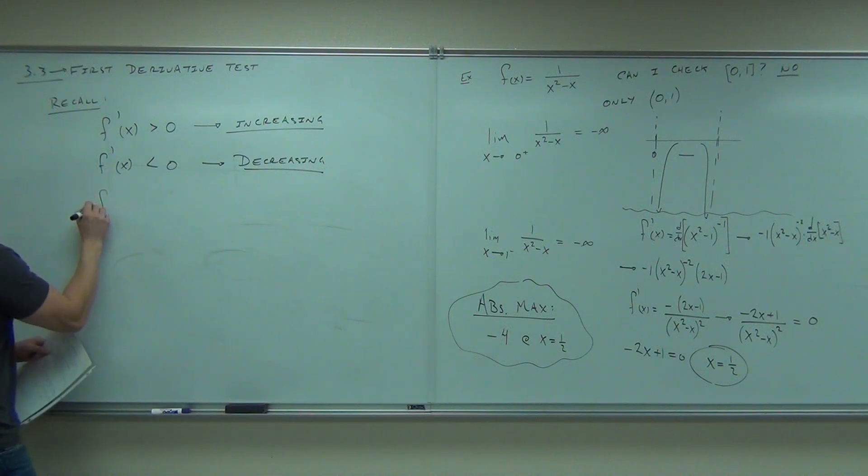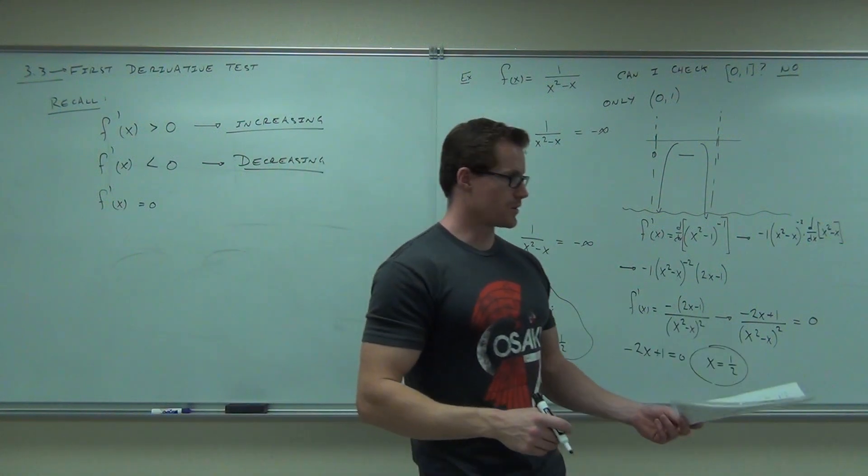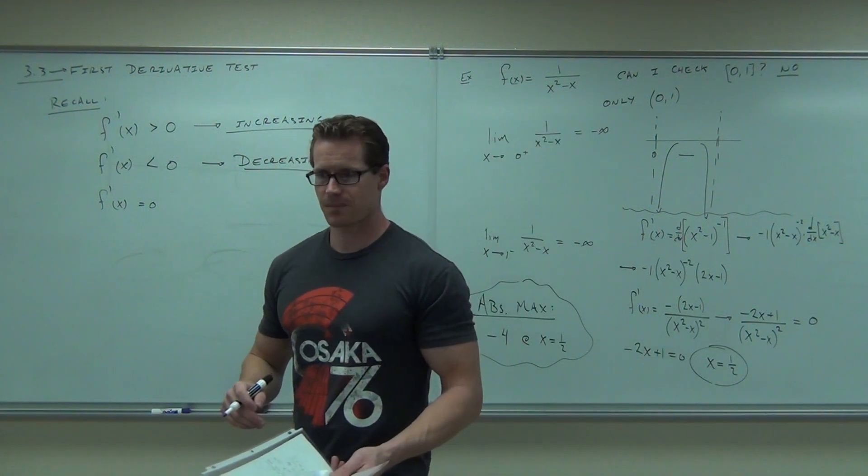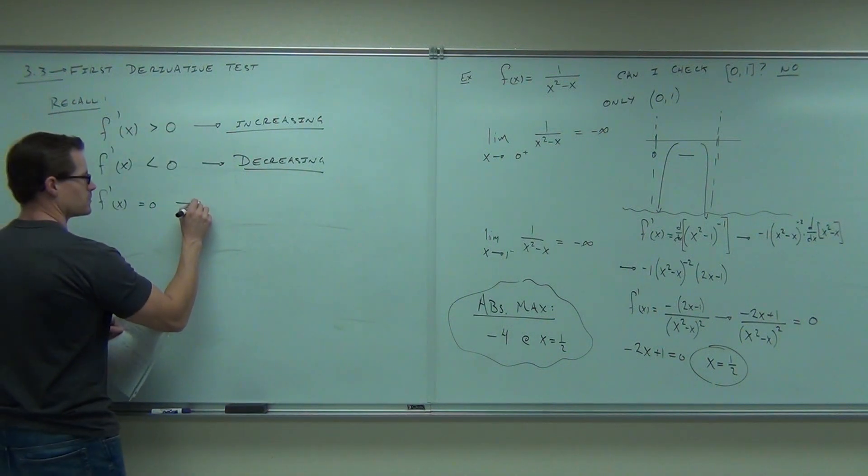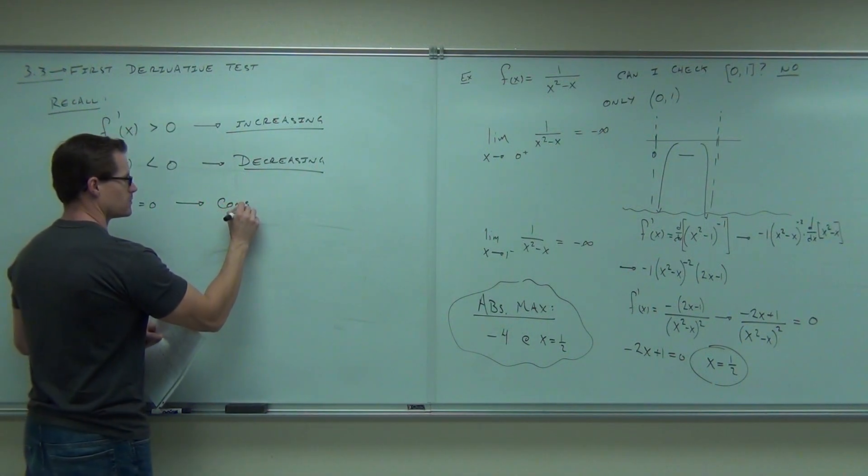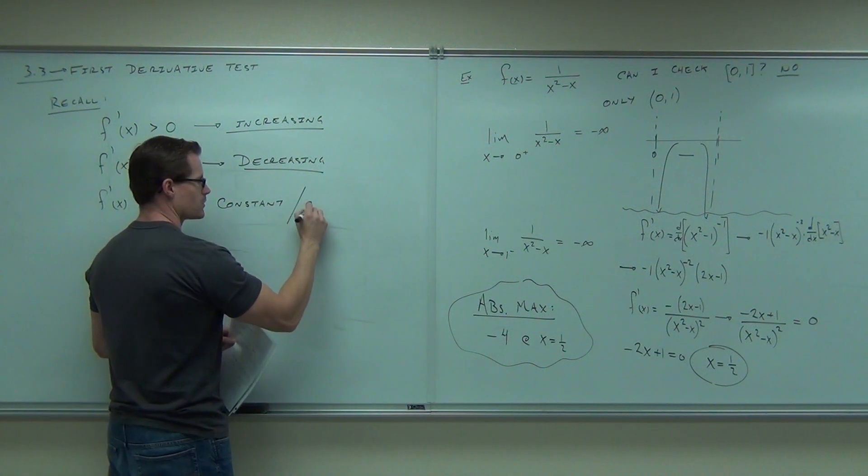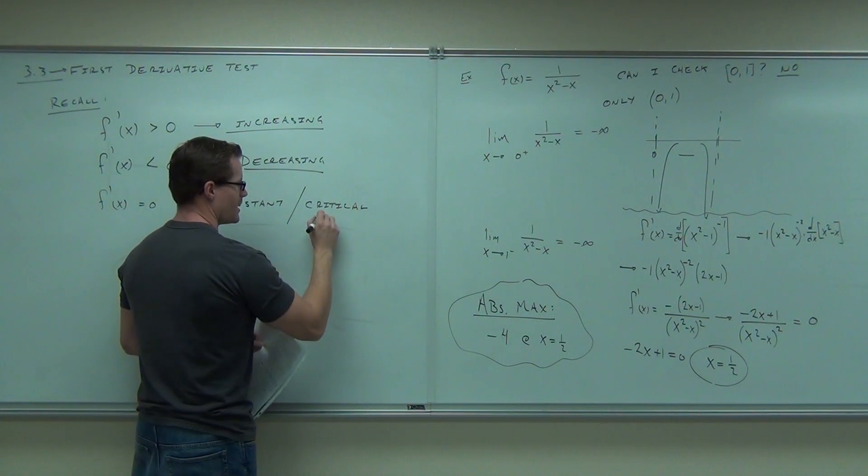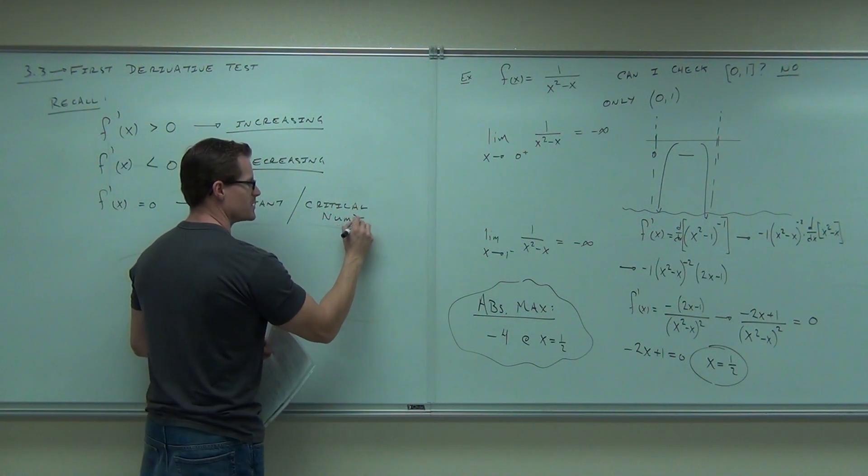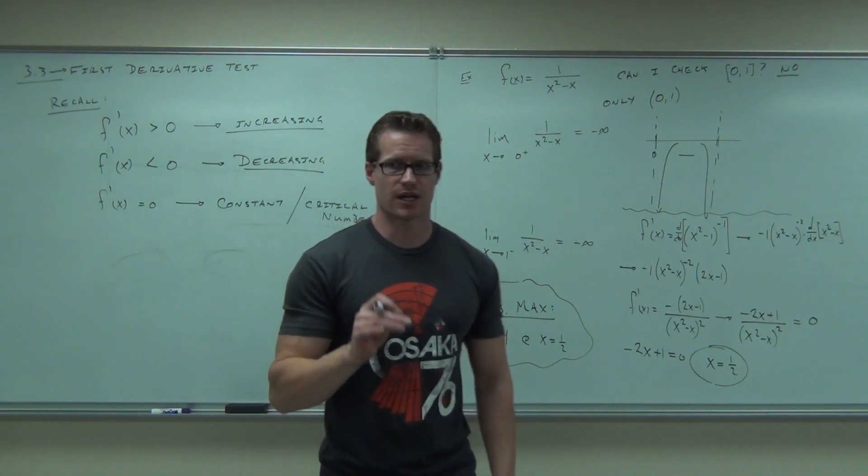What does f'(x) = 0 mean? Constant. Constant. That would be a horizontal tangent. That would be finding critical numbers. Constant or critical numbers, or critical points if you prefer. I think they switched to critical numbers because technically x equals a value isn't quite a point, is it? It's just a number.